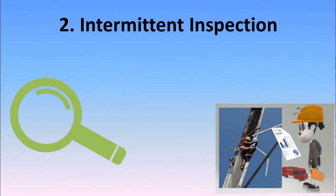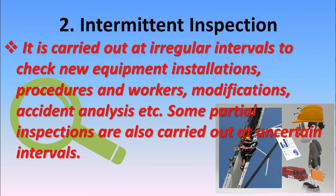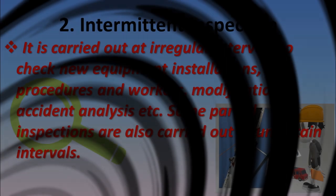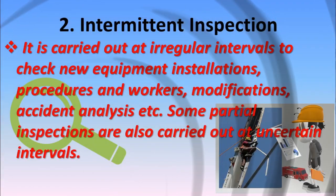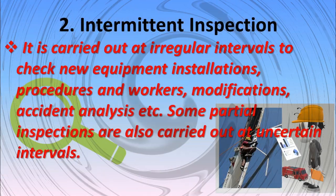Intermittent inspection is carried out at irregular intervals to check new equipment installations, procedures, worker modifications, accident analysis, etc. Some partial inspections are also carried out at uncertain intervals. Any inspection carried out at uncertain intervals is called intermittent inspection.